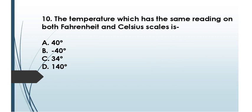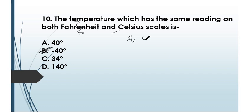Question number ten: at which temperature do Fahrenheit and Celsius scales have the same reading? The answer is minus 40 degrees. The relation between Fahrenheit and Celsius is F = (C × 9/5) + 32. Let's verify this by substituting the same value x for both scales.